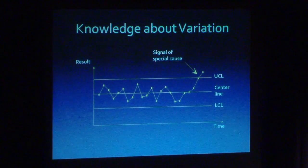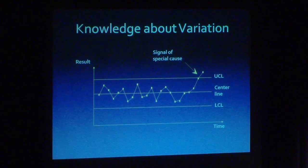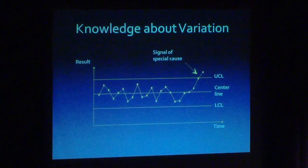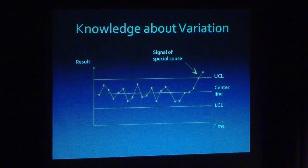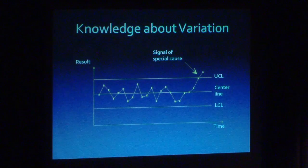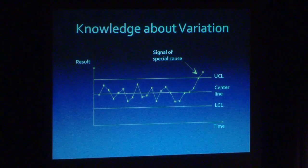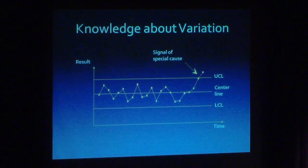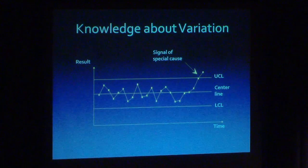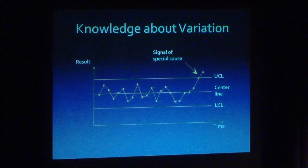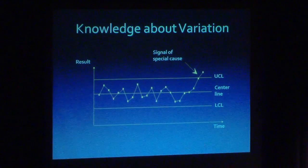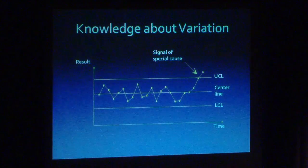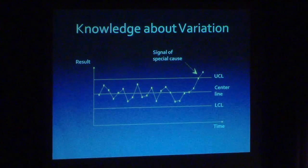To the contrary, the improvement process is one where first of all we focus on the special causes of variation and learning about what's special about those underlying conditions, taking actions for improvement based upon that, and then hopefully bringing the process into a state of statistical control. Once we get it into a state of statistical control, then we move into a different kind of question.